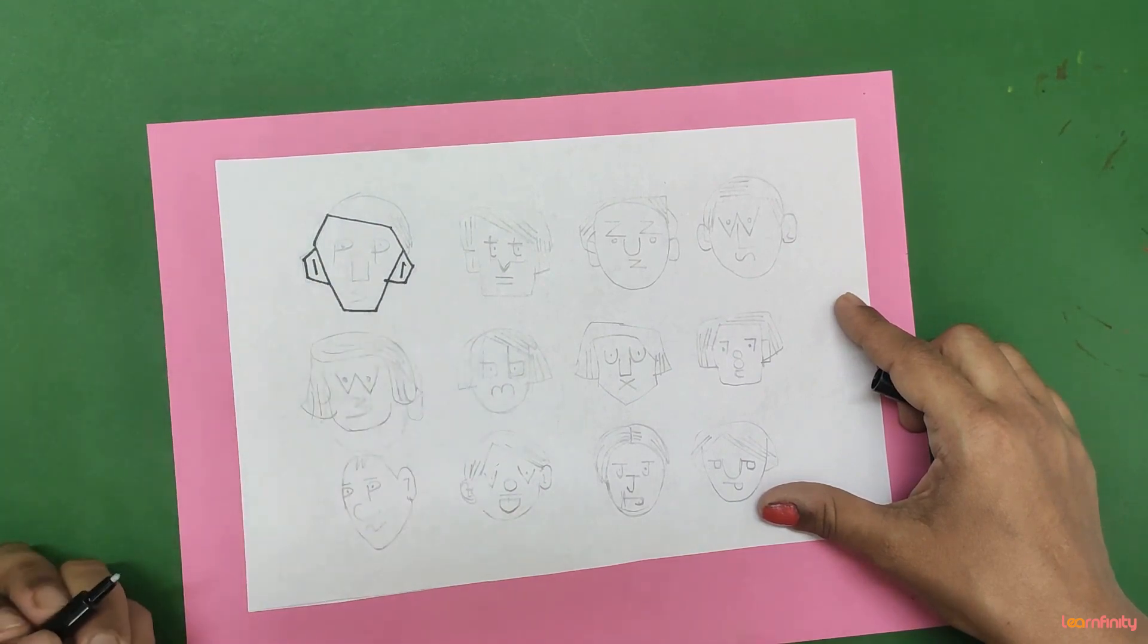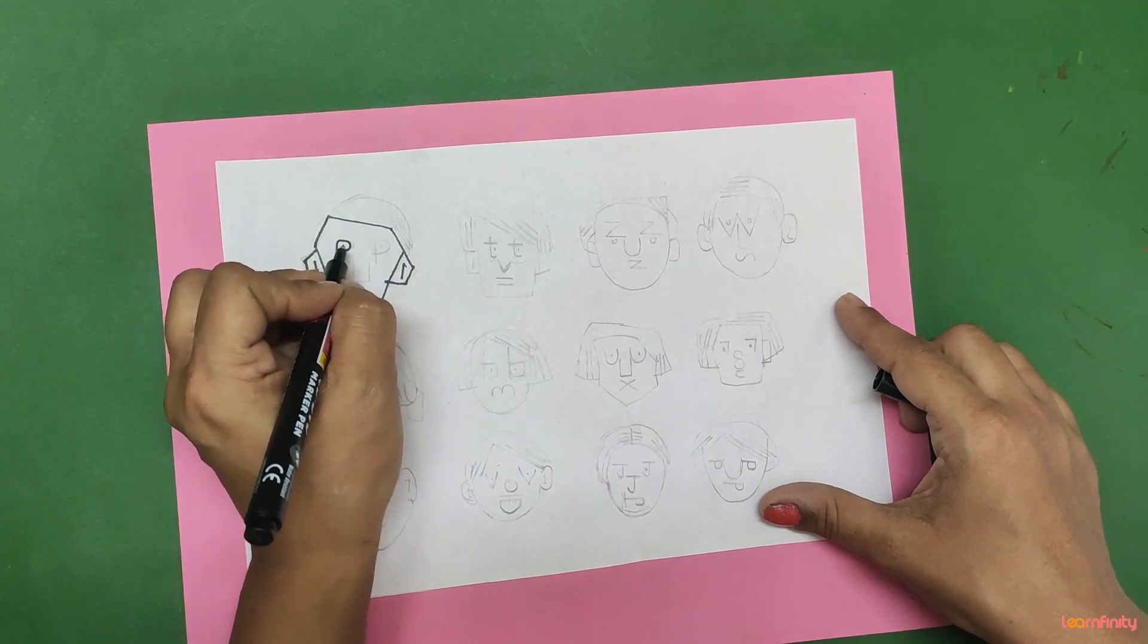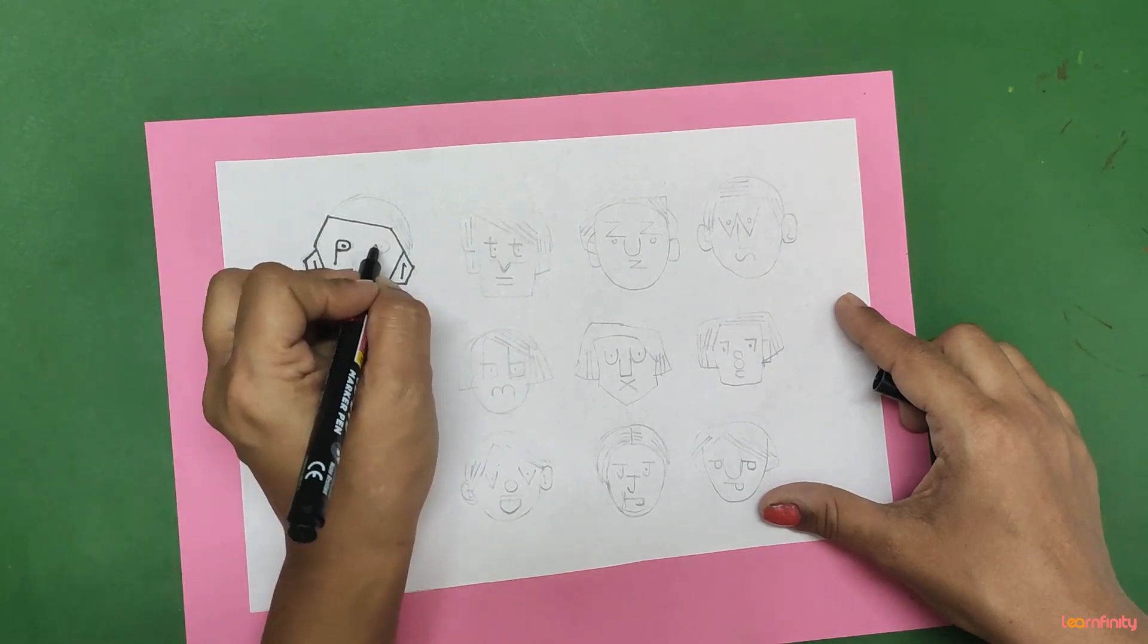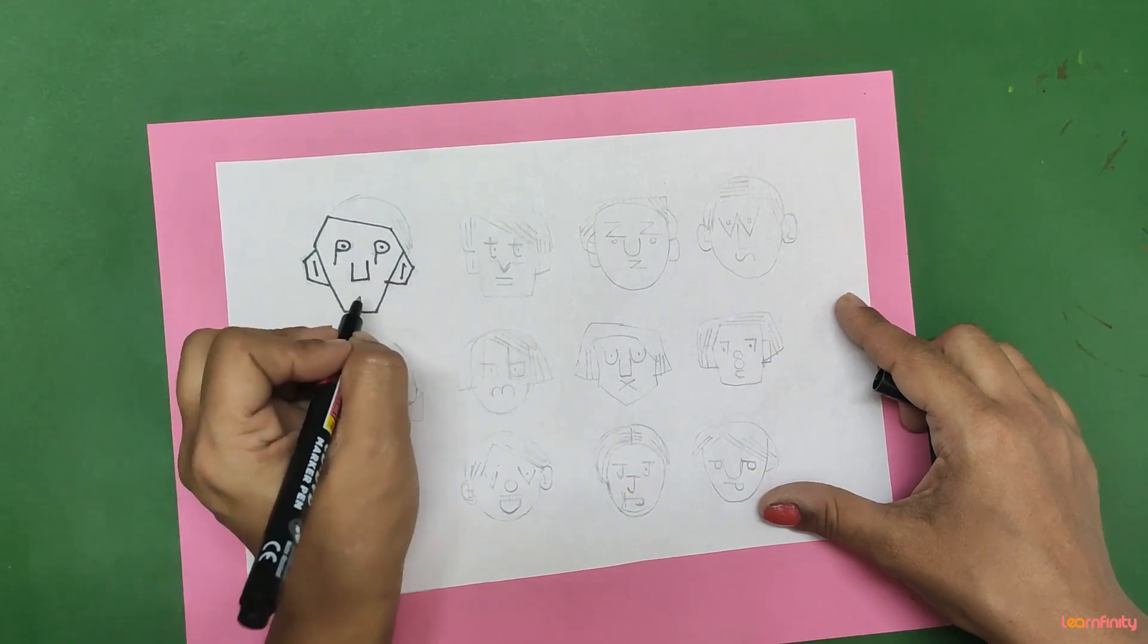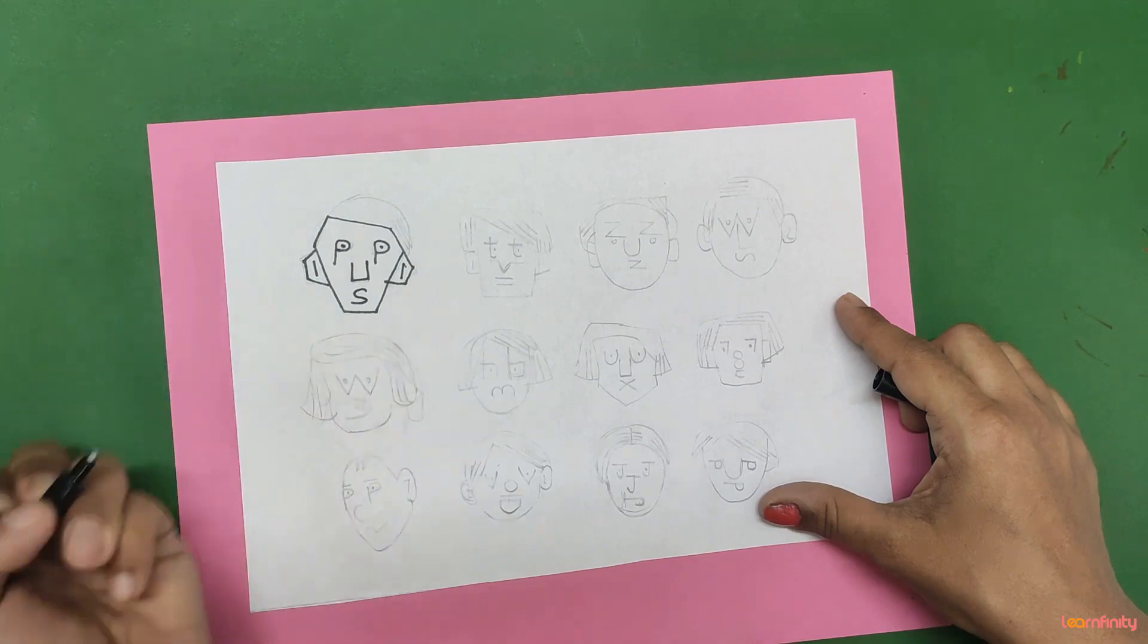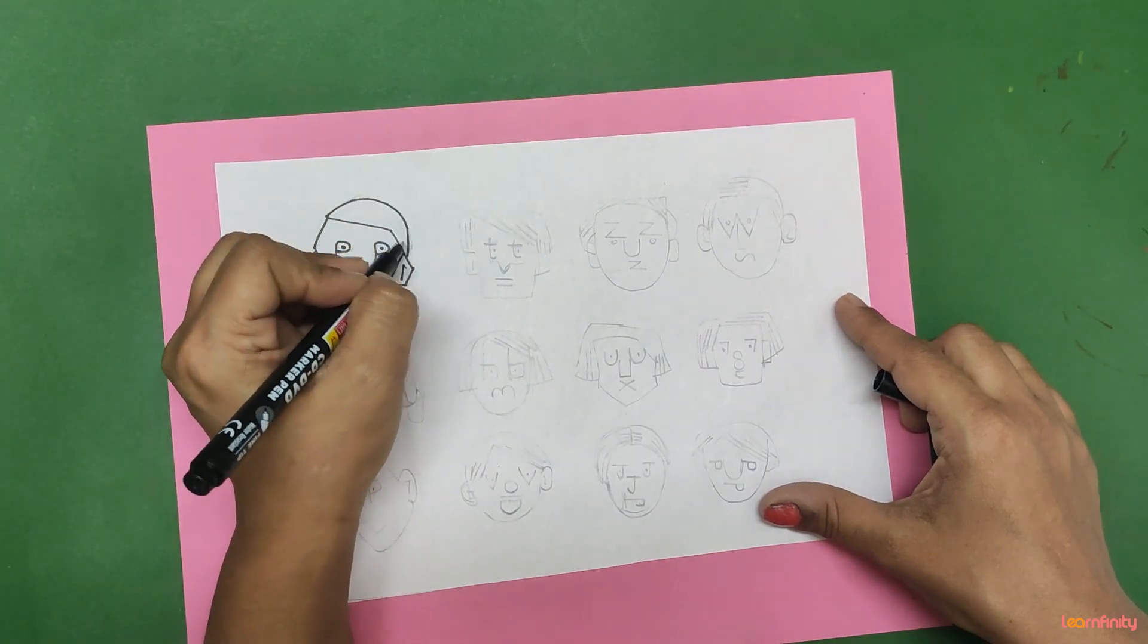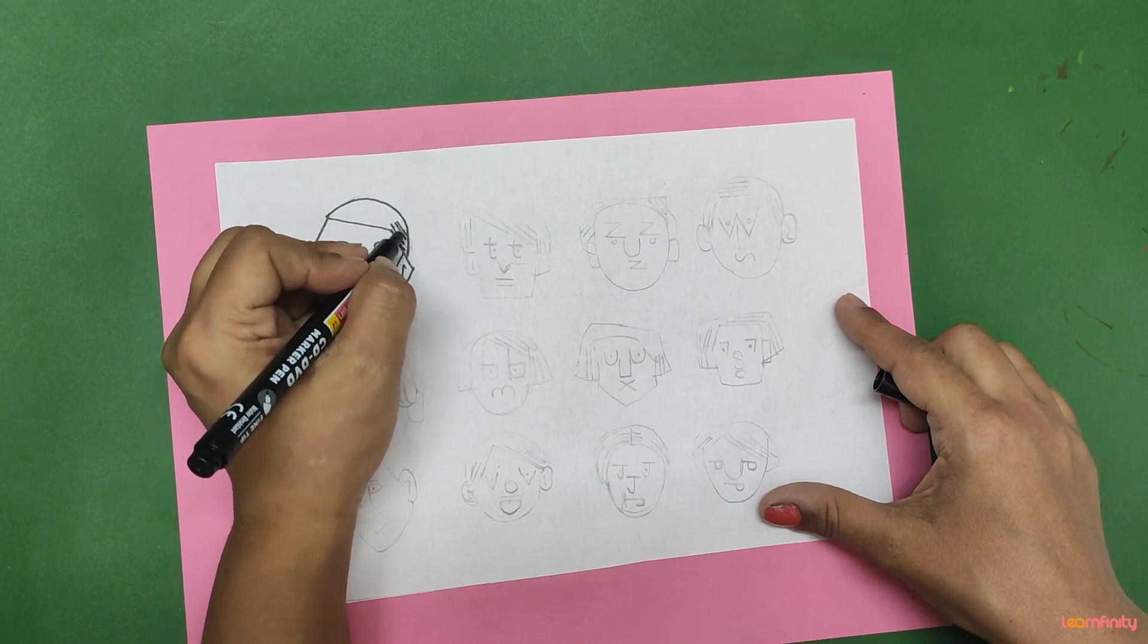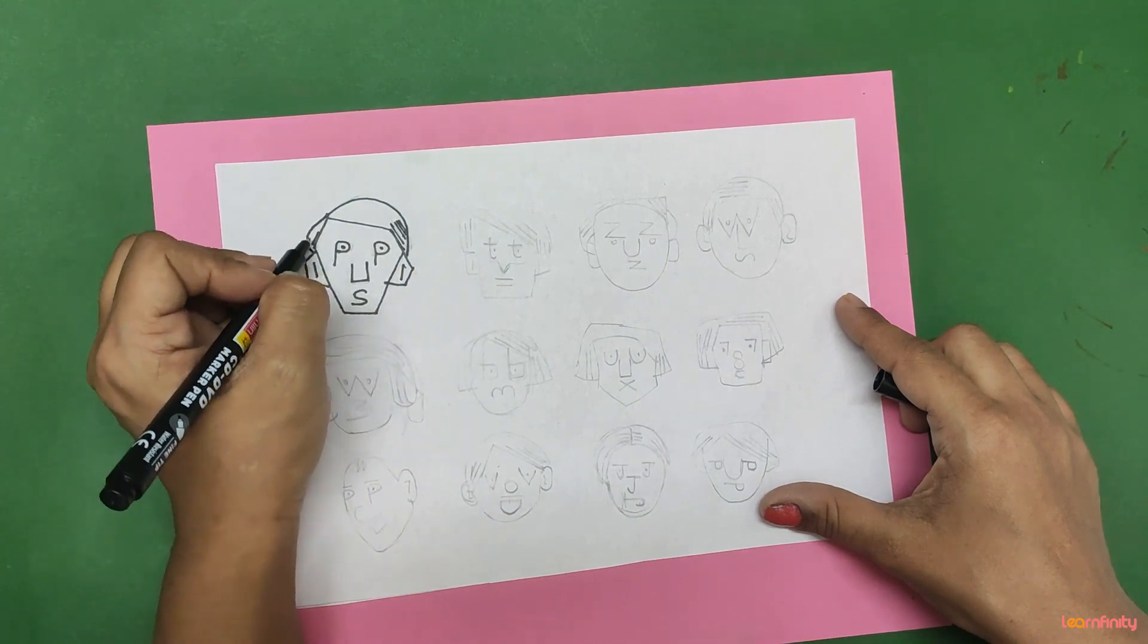Now here we are going to write P and dot, this side also P and dot, U, S. And here we are going to draw hairs of this funny character.